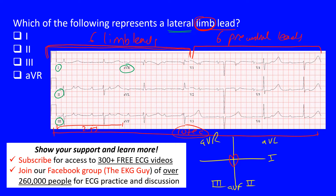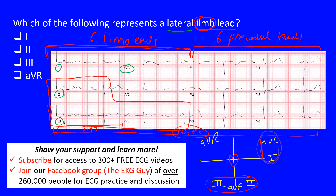The lateral limb leads are the ones on the lateral portion of the heart — that's lead one and AVL. The inferior leads are two, three, and AVF, sitting below and looking at the inferior portions of the heart. AVR sits in its own position, and you may also hear of negative AVR, which is simply the inverse of AVR.